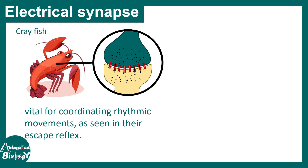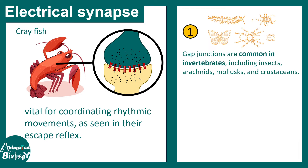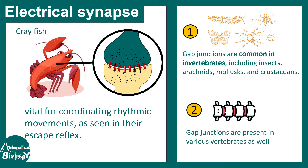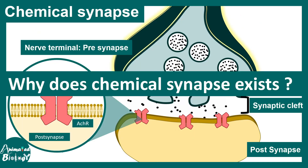Electrical synapses are found mostly in invertebrates such as crayfish, and this is vital for coordinating rhythmic movement as seen in their escape reflex. These kinds of gap junction coupled synapses are also common in insects, arachnids, mollusks, and crustaceans. But not only in invertebrates — they can also be found in vertebrates; for example, during early synaptogenesis, these channels are found in humans as well.